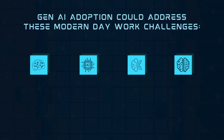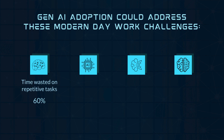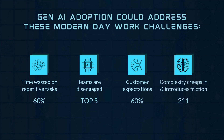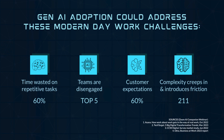This slide shows some of the modern-day work challenges Gen AI could address. Did you know that 60% of a person's time at work is spent on work about work? Team disengagement is a top-five driver for digital transformation. 60% of customers will switch brands after just one to two bad experiences. And 211 is the average number of apps for a company with more than 2,000 employees. Hopefully, Gen AI adoption could gradually help fix each one of these issues.